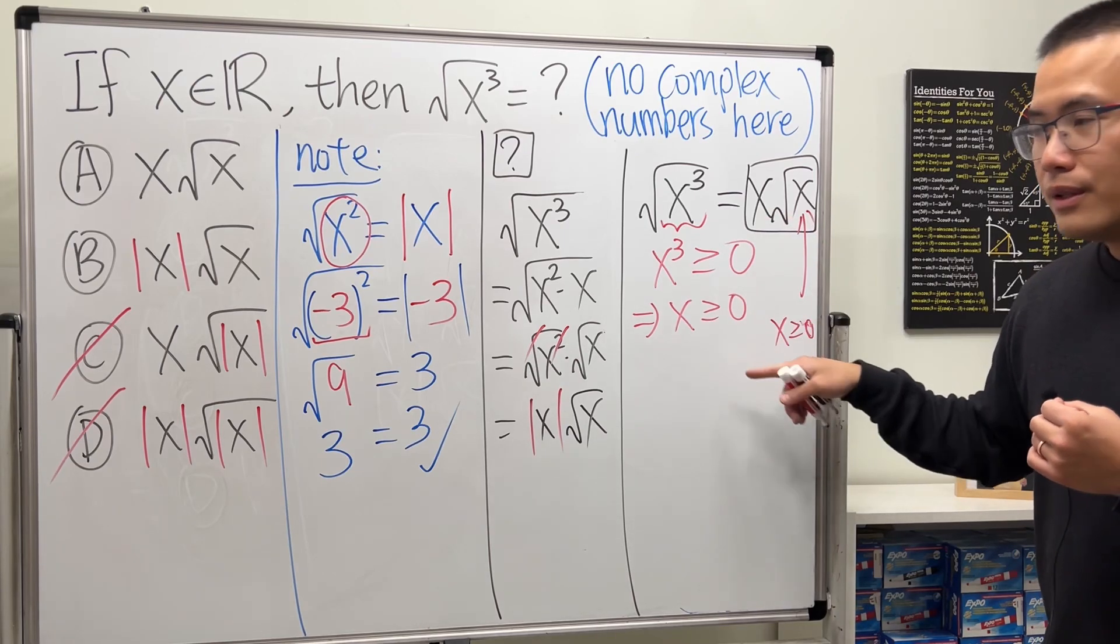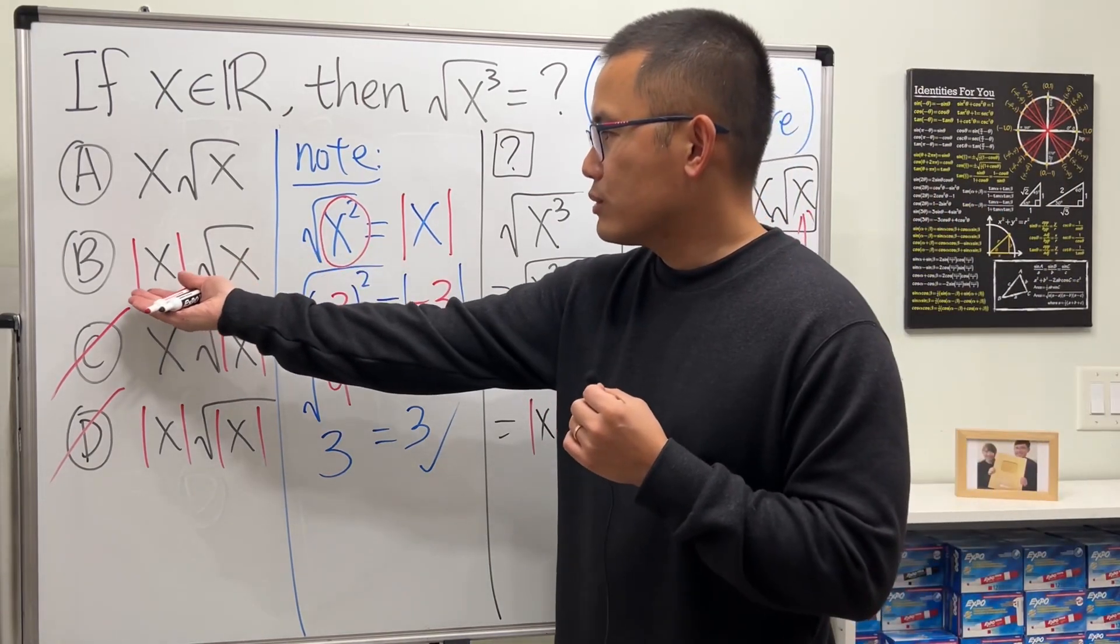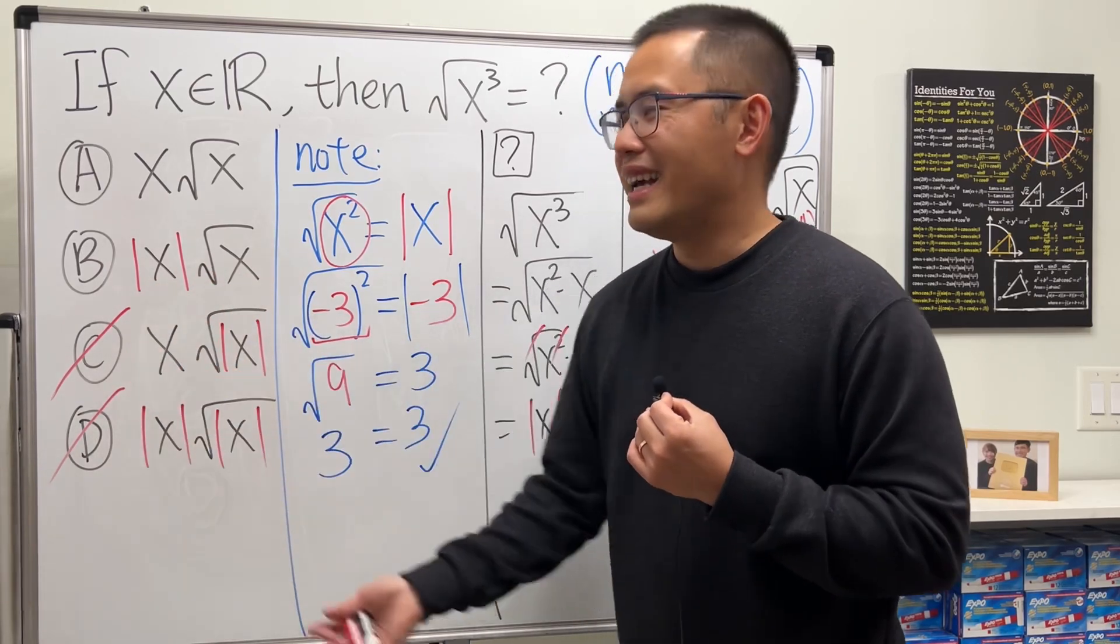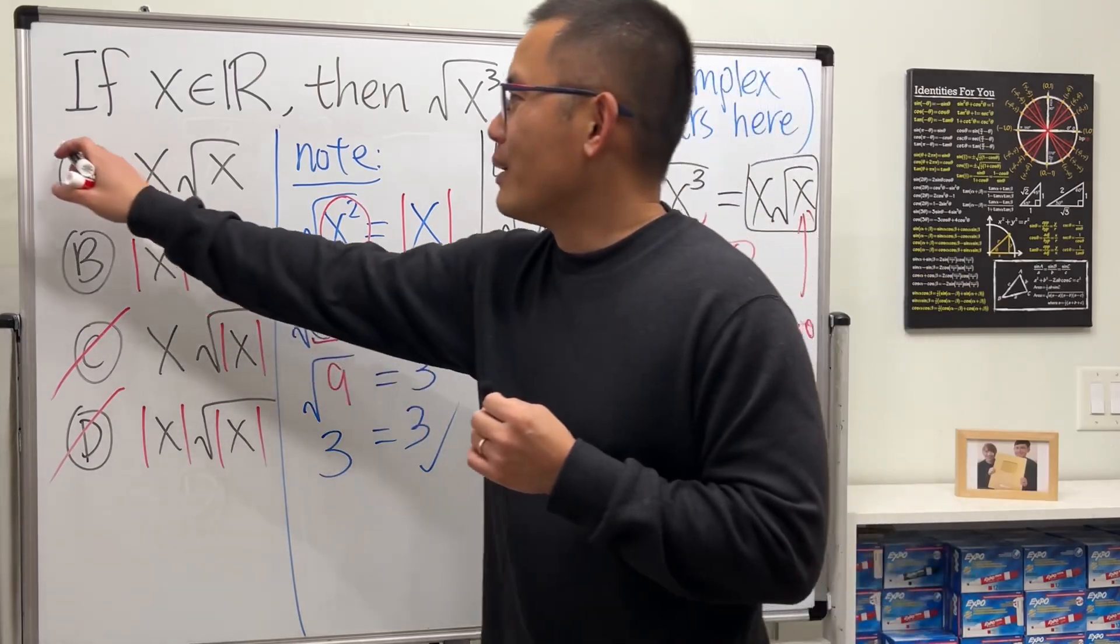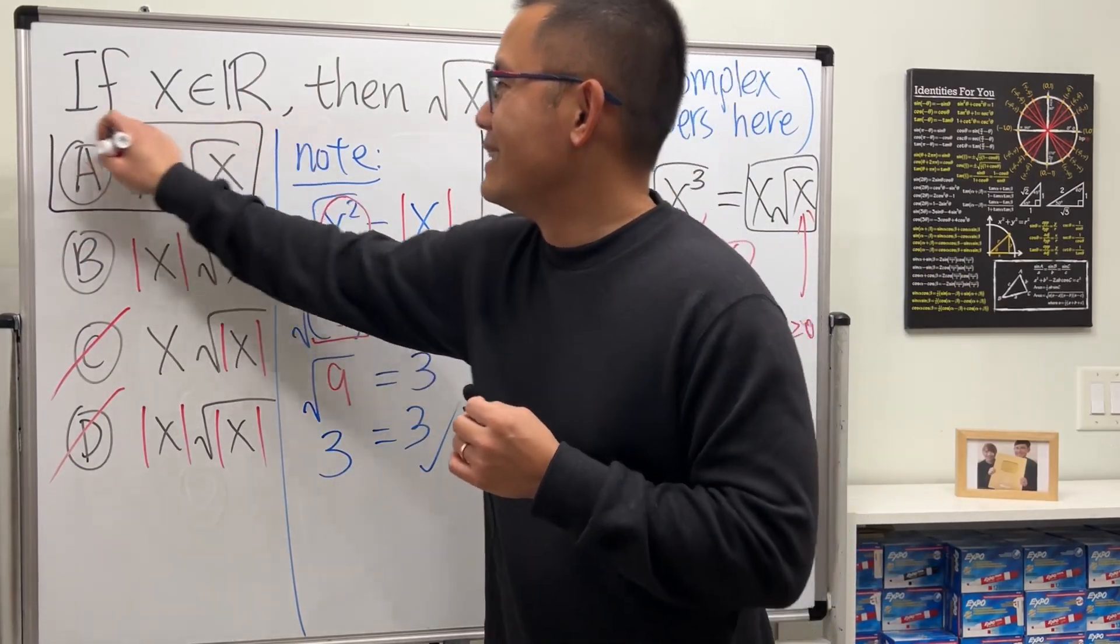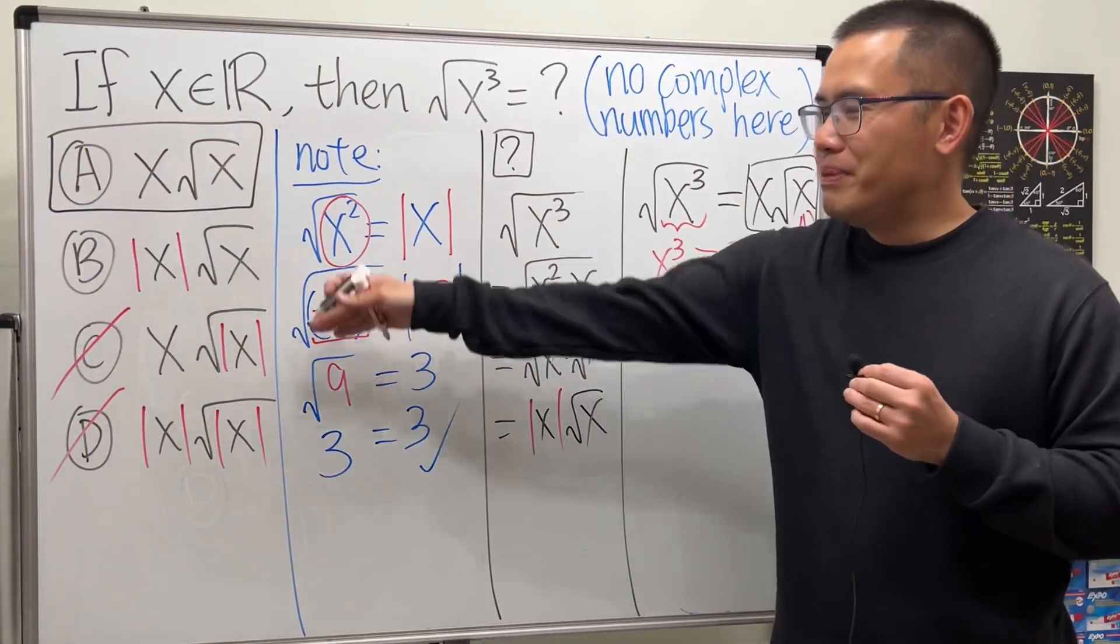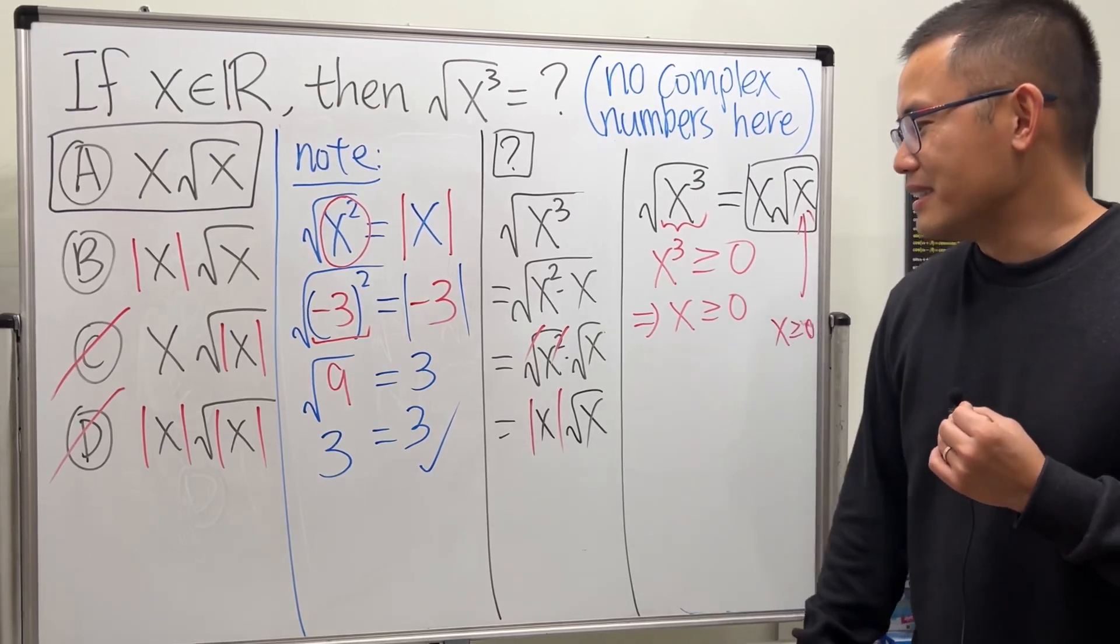So if you have the x absolute value, it's just extra, and sometimes it's no good. Yeah, so I will tell you the answer is A, but if you box B, I'm not going to mark it wrong either. It's just not that correct.